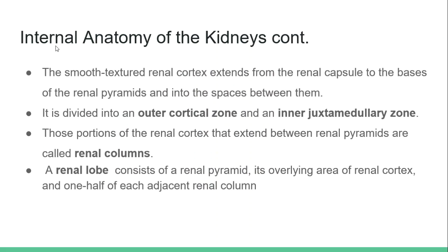The smooth-textured renal cortex extends from the renal capsule to the base of the renal pyramids and into the spaces between them. It is divided into the outer cortical zone and the inner juxtamedullary zone. Those portions of the renal cortex that extend between the renal pyramids are called renal columns.